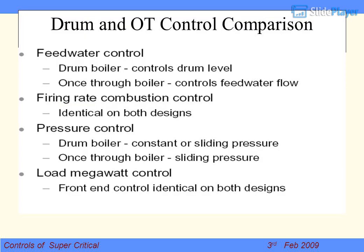Drum and Once-Through Unit (OTU) control comparison. Feed water control in drum type boilers should be known to you. The drum acts as a buffer and it can work as a three-element or one-element controller. It is one of the most important loops in C&I. Operations always demand this loop to be on AUTO. So the feed water loop controls drum level in drum type boilers; in OTU, feed water controls the feed water flow directly.